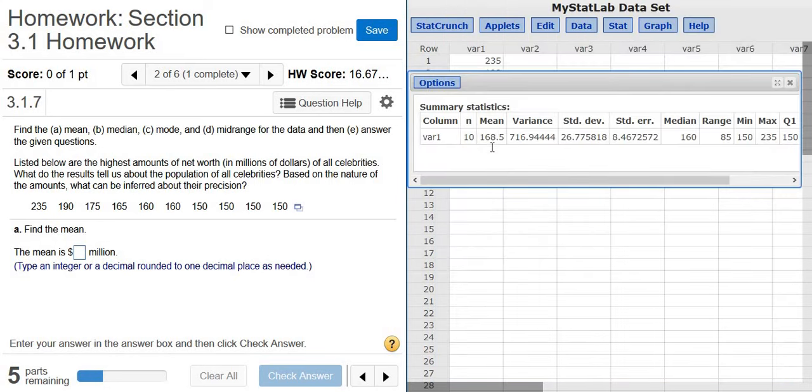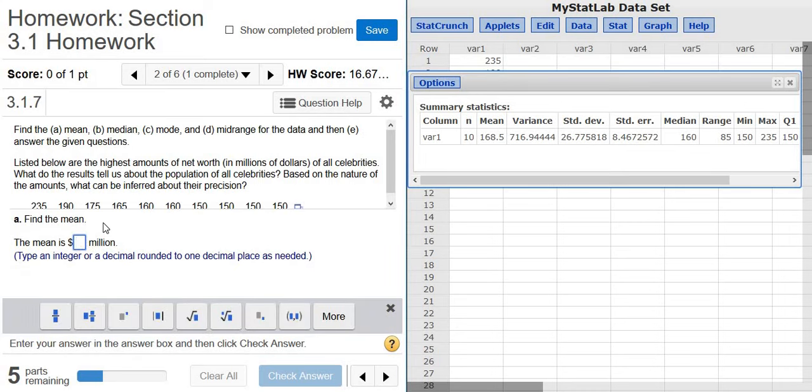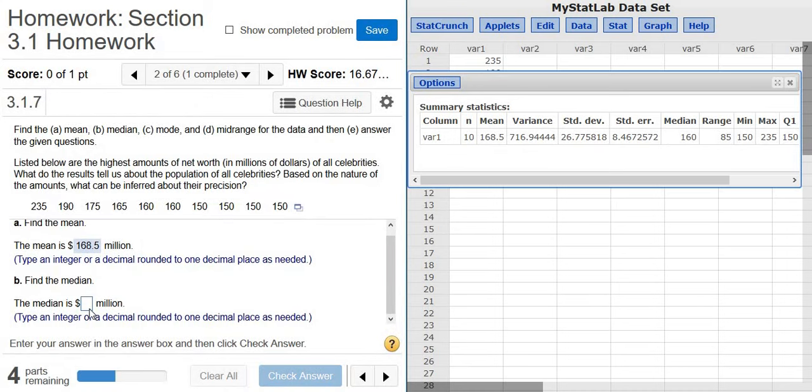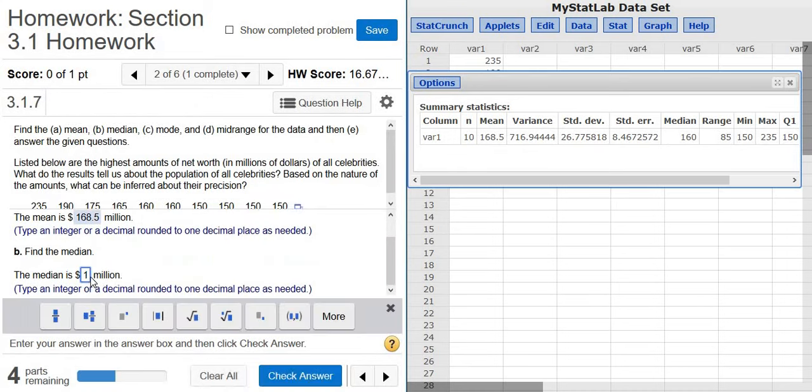Now we have the mean. It wants one decimal, so that should be 168.5 in this case. Let's try it. The median is 160.